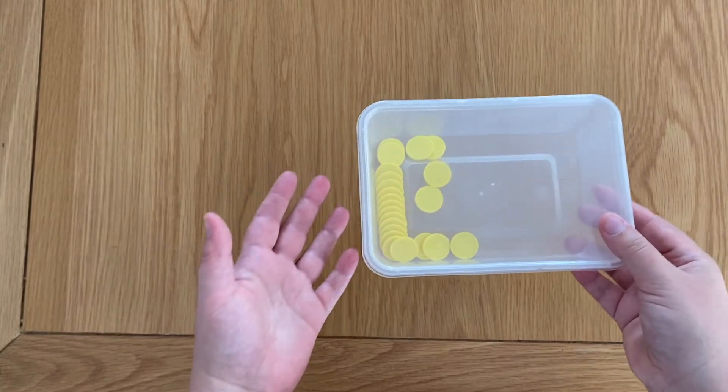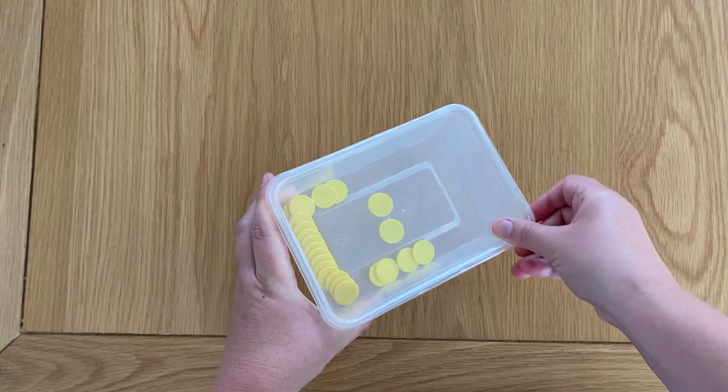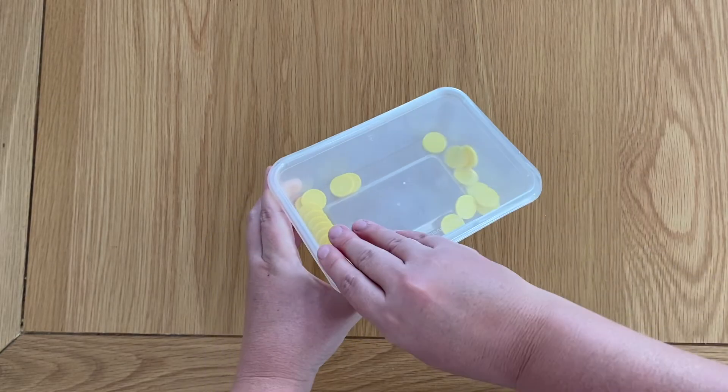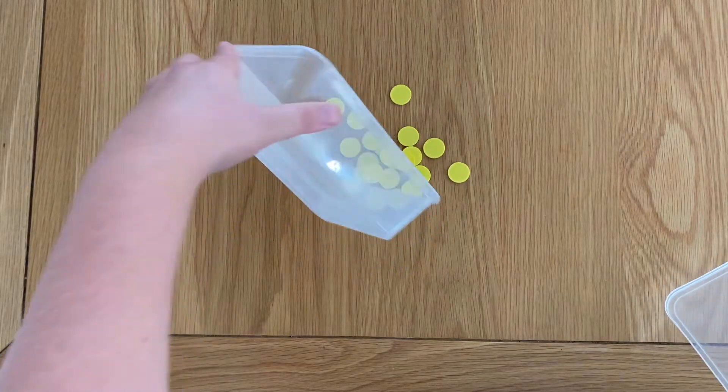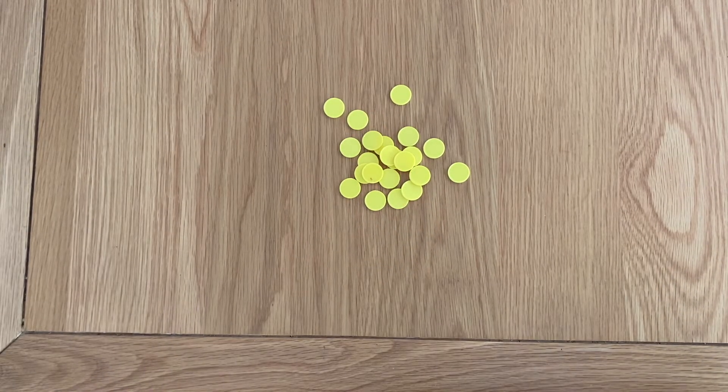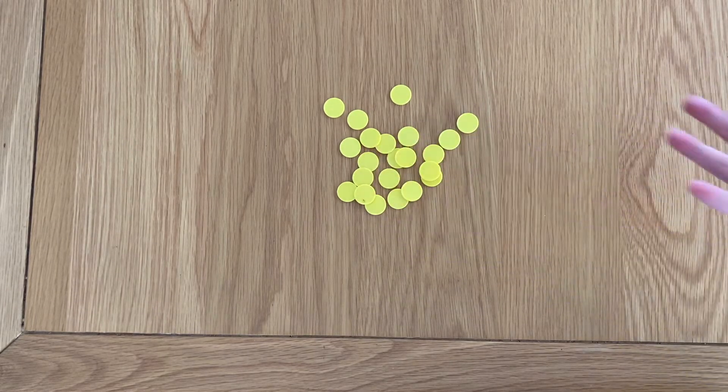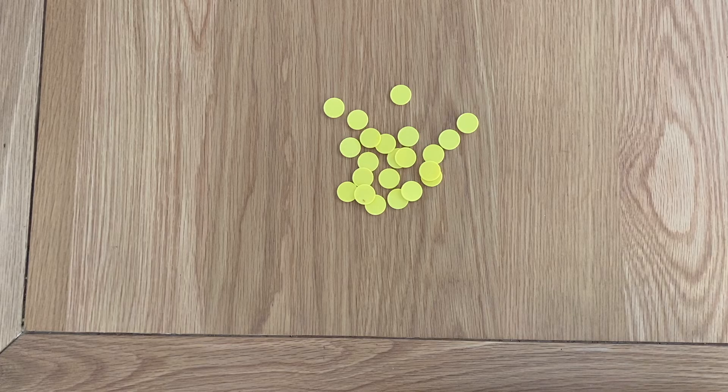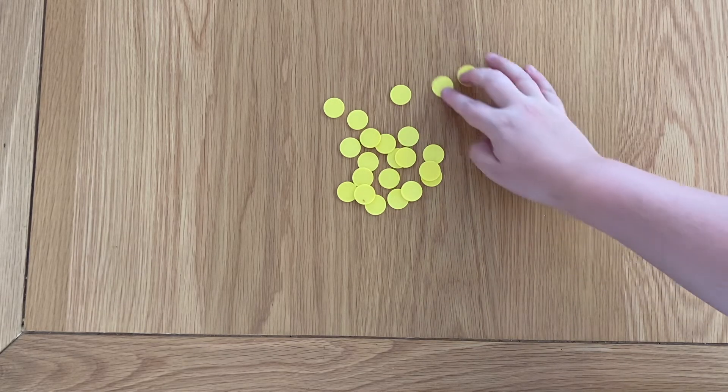Once we've done that it's then time to count. So I usually will choose a different student every time we do this to count the collection and usually we're sitting in a big circle and the student that's counting can pour all the counters into the middle of the circle and show us how they're going to count them. Hopefully after reading Emma's Big Counting they will not try to count the counters one by one because we know that sometimes that makes us lose our place in where we are in the count but they might start to organize it instead.